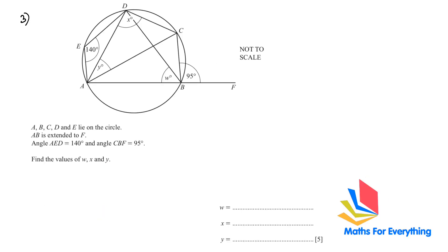Question number 3. A, B, C, D and E lie on the circle. AB is extended to F. Angle AED is 140 and angle CBF is 95. Find the values of W, X and Y. We know that in a cyclic quadrilateral the opposite angles add up to 180. Therefore, angle DEA plus W equals 180, so W equals 180 minus 140, which is 40.